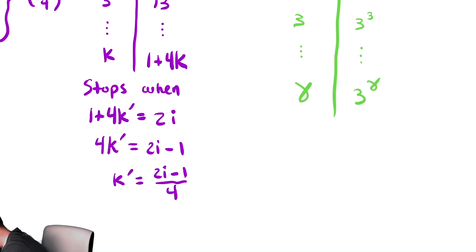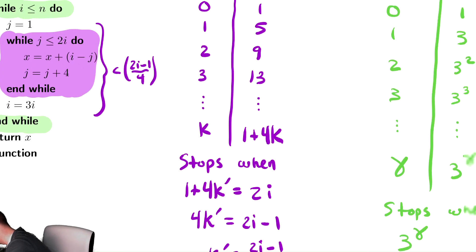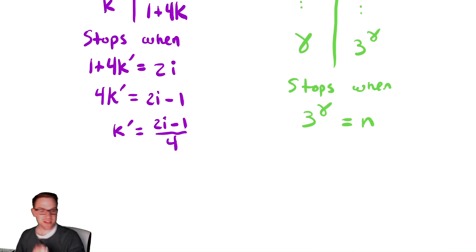So this stops when our pattern, our generic expression three to the gamma is equal to the stopping condition, which in this case is n. And just as we did in purple, we're not going to just call this gamma. We'll call it gamma prime, some other symbol to make it a little bit differentiated from our pattern that we noticed. We're going to solve that for gamma prime. So we get gamma prime equals log base three of n. And now we need to combine our information somehow. And this is where we could try to develop all the tables and stuff that we did before. However, that was just a justification for our technique that we are going to use.